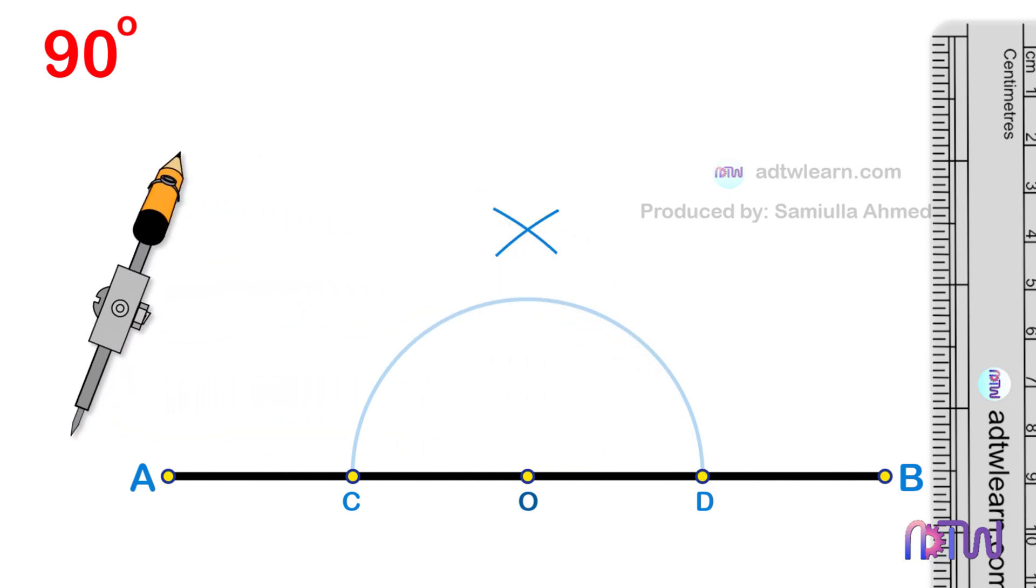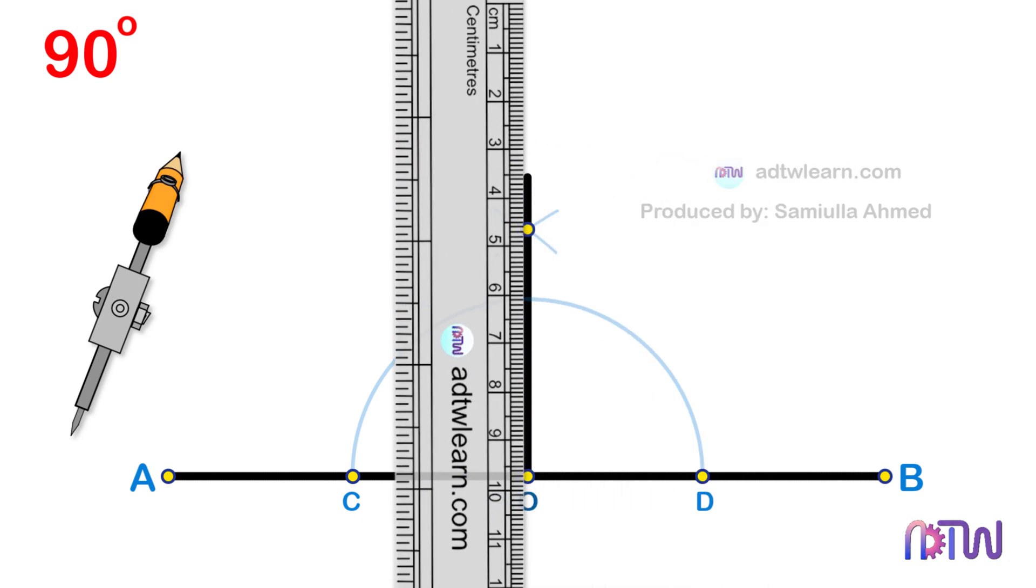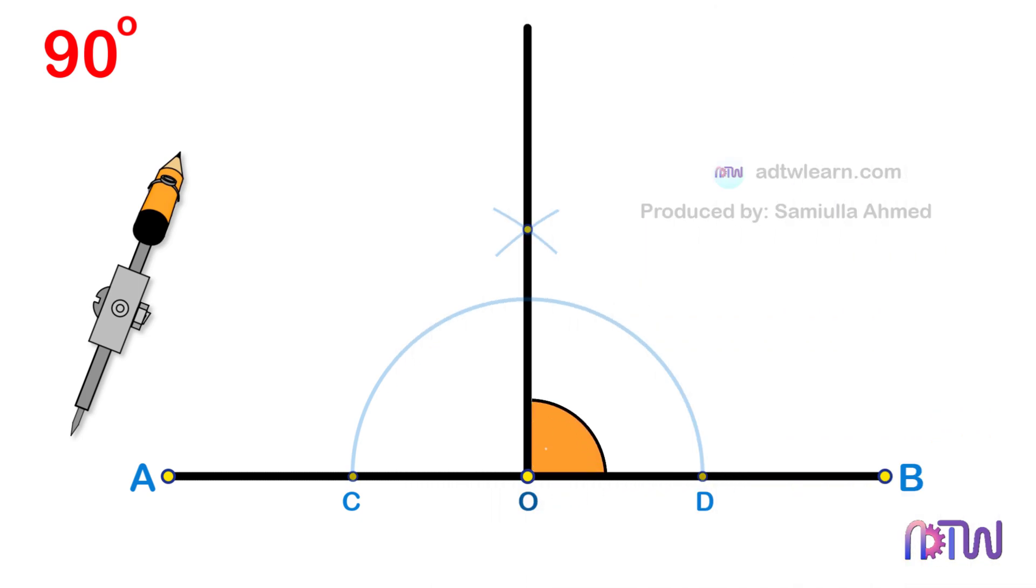Draw a line passing through this point from the center point O of the line. This is the required 90-degree angle.